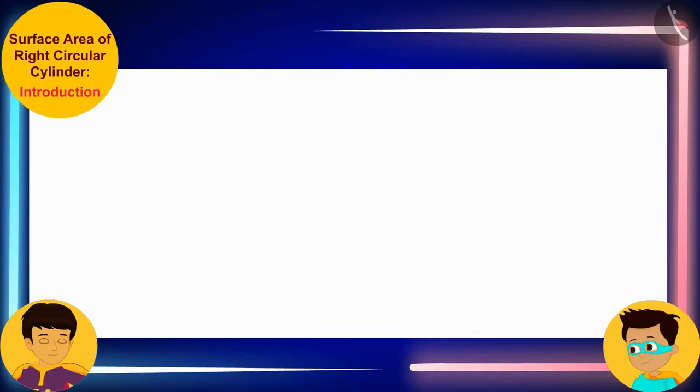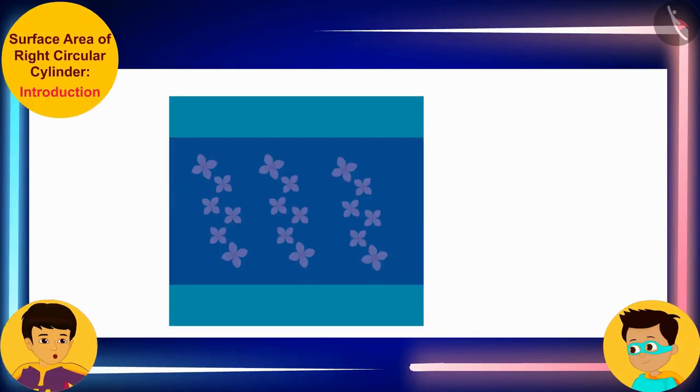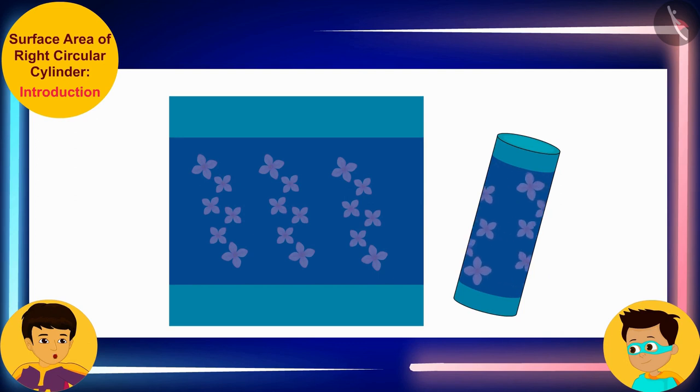Look Thomas, the paper you use to make cylindrical incense stick packets will be used for all its surfaces. This means that the paper used to make a cylindrical packet will be equal to its total surface area.